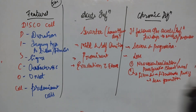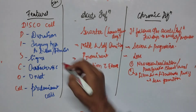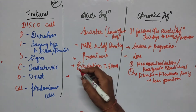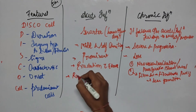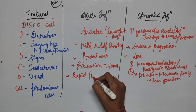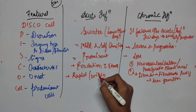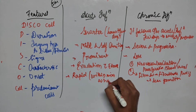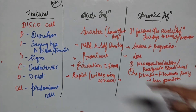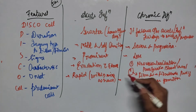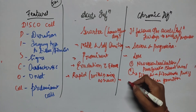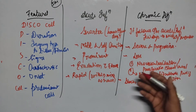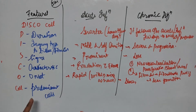Regarding Onset: acute inflammation is early and rapid — occurring within minutes to hours after the trigger. Chronic inflammation, as it follows acute inflammation, is slow in onset and takes days to weeks.